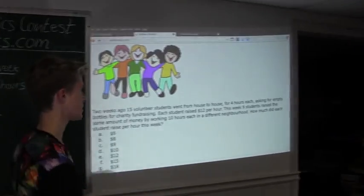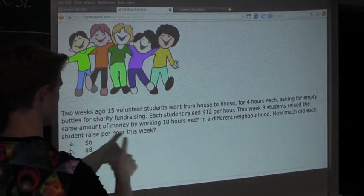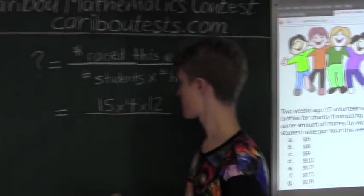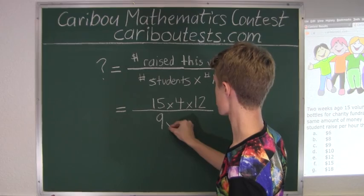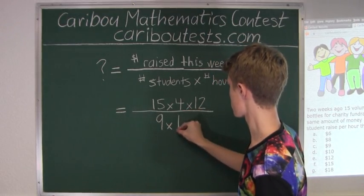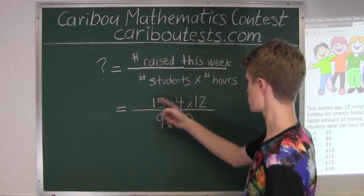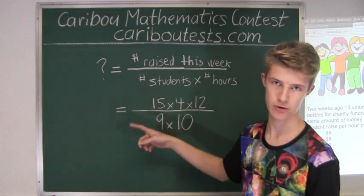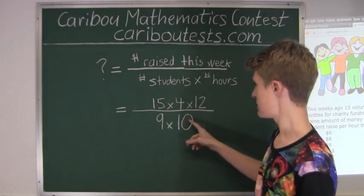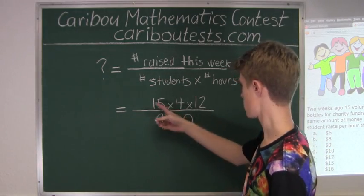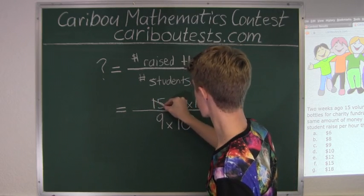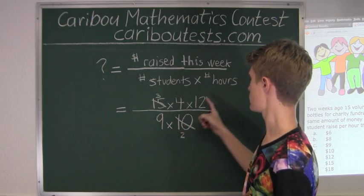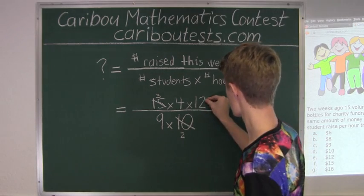And we also know that for this week, nine students raised the same amount of money by working 10 hours each, so we have 9 times 10. Instead of multiplying out the numerator and denominator and having these big numbers, we will simplify first and then multiply out. So we know that 15 over 10 can simplify to 3 over 2, and we know that 12 over 9 can simplify to 4 over 3.